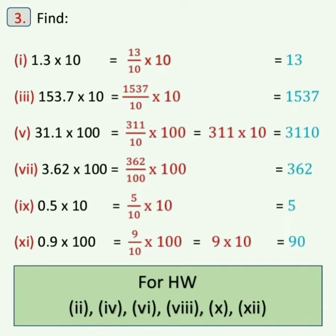Now the fifth one: 31.1 into 100. Write 31.1 as 311 upon 10, into 100. Cancel 00 from numerator and denominator, giving 311 into 10, which is 3110. Now the ninth one: 0.5 into 10. We can write 0.5 as 5 upon 10, into 10. Cancel the 10 and the answer is 5.